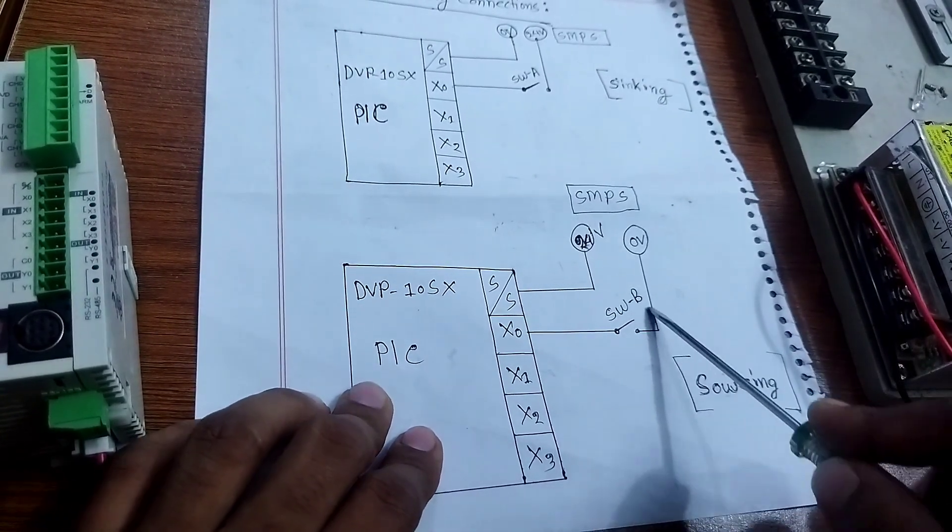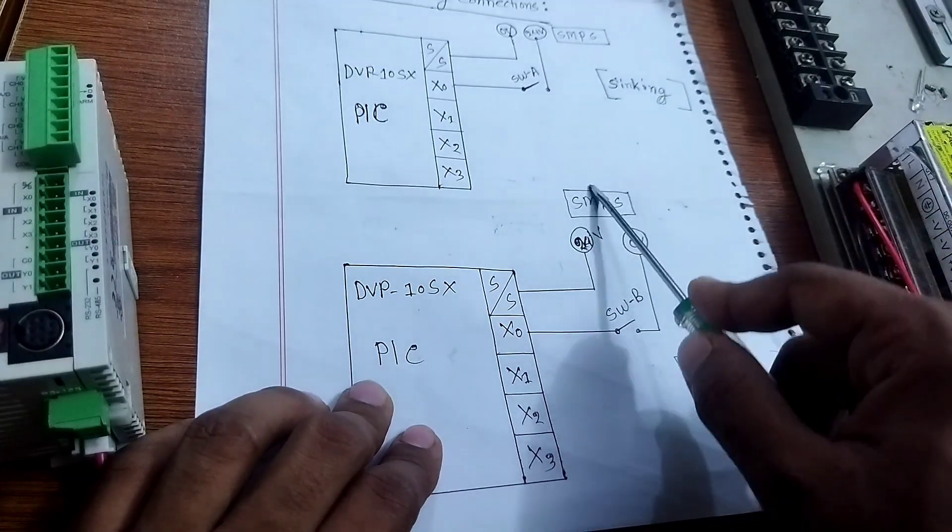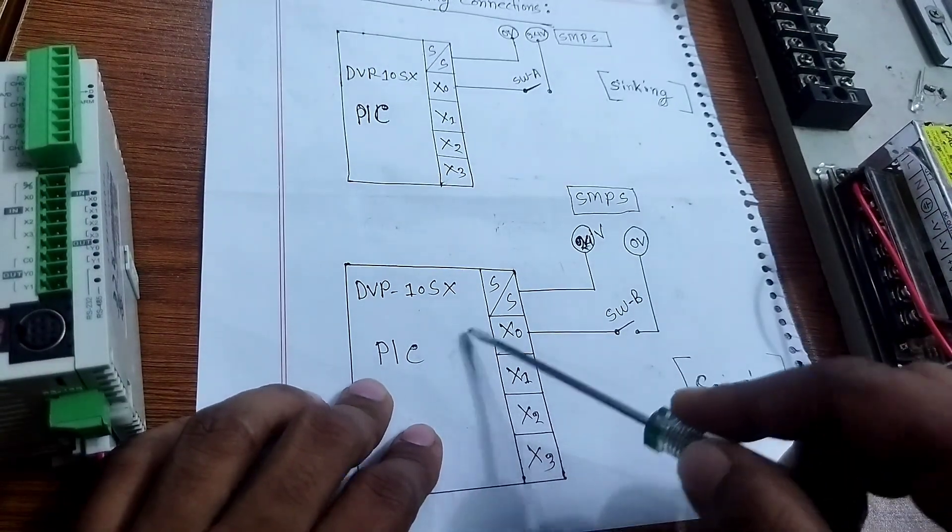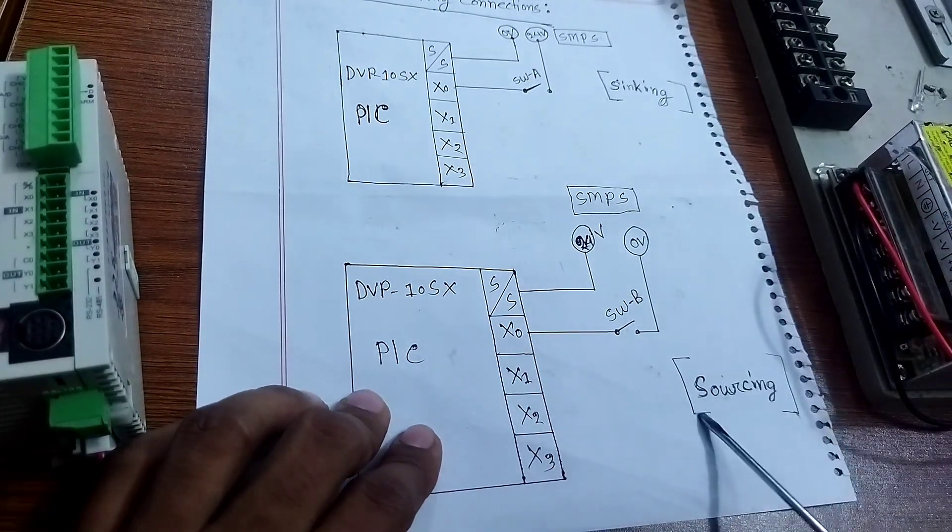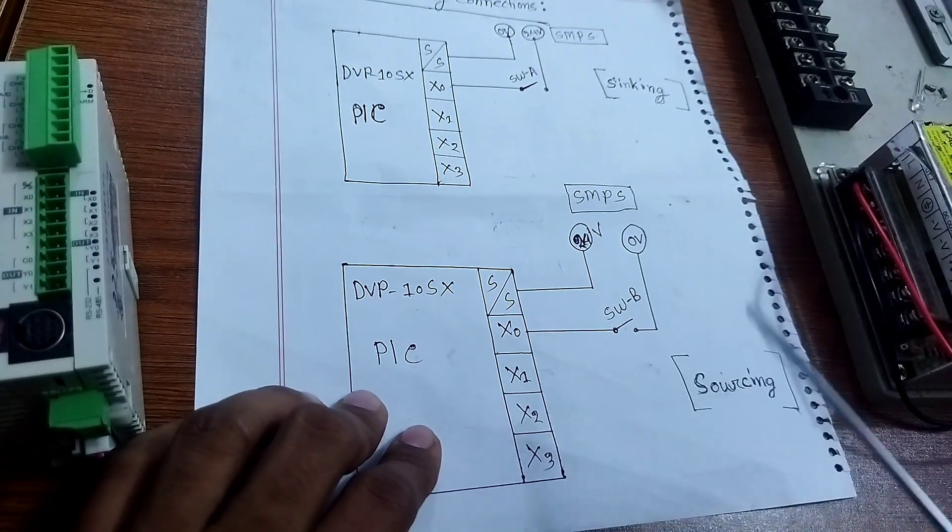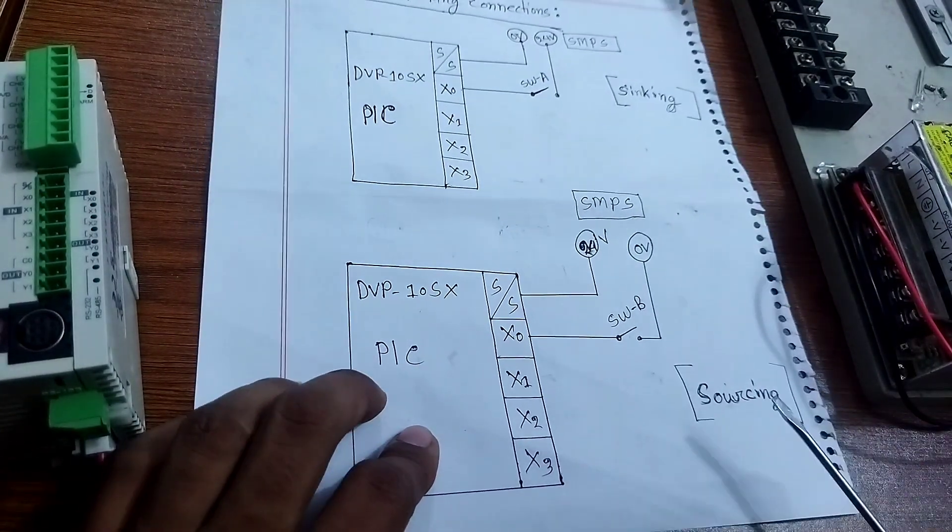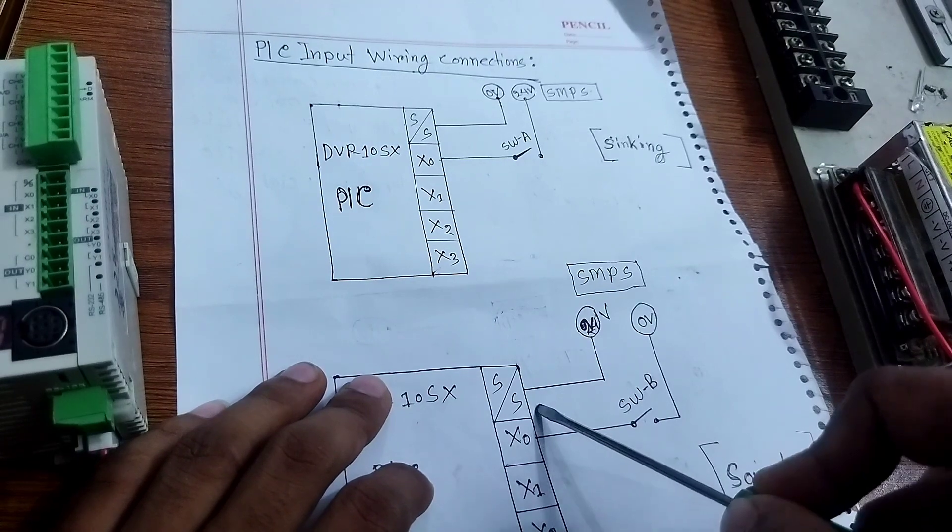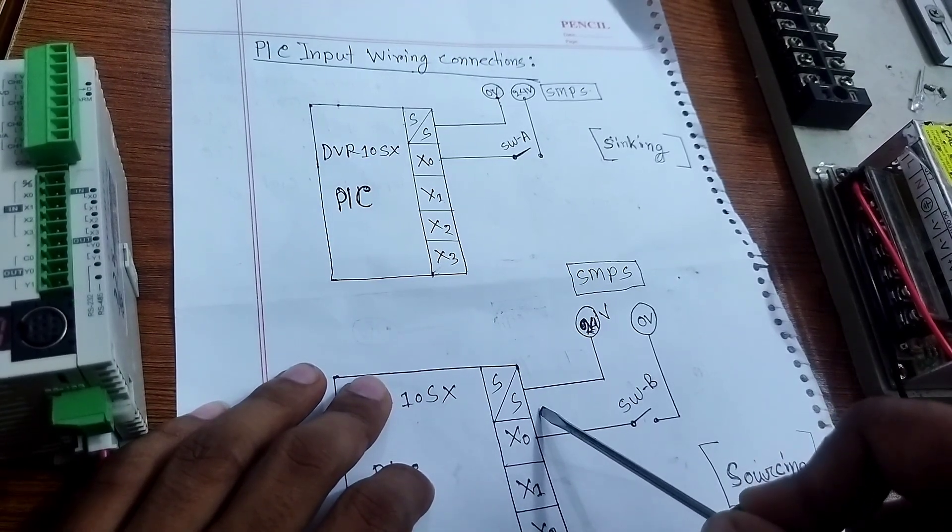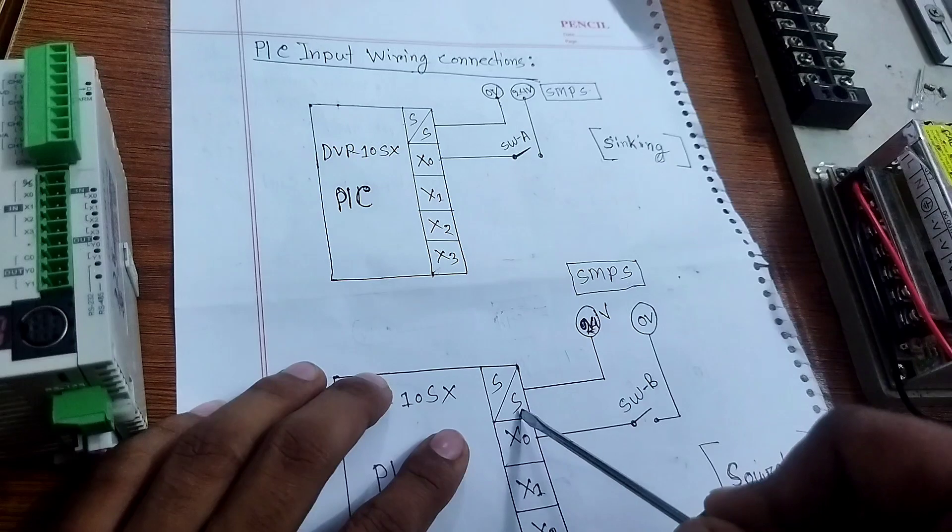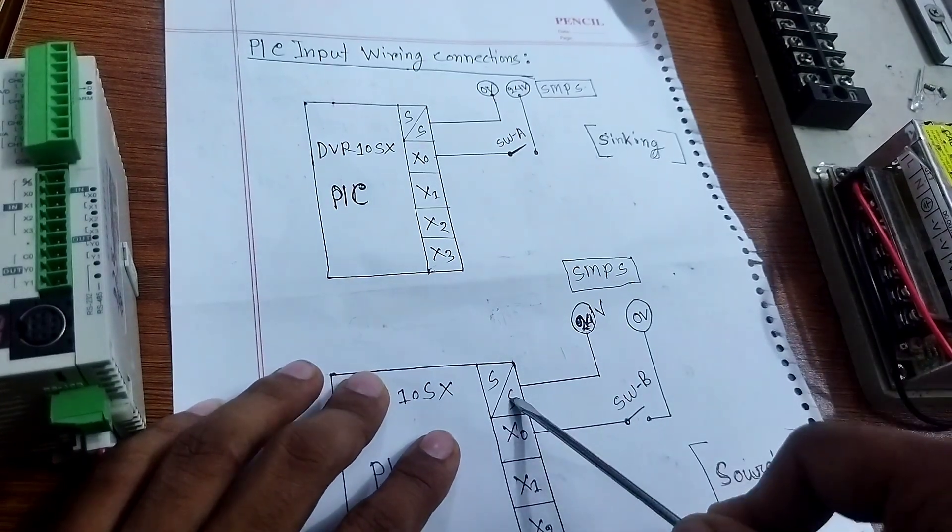For PLC source ordering, if we activate zero volt on SS port, then it is sinking ordering. And if you connect 24 volt to the SS port and output the switch to zero volt, this is sourcing ordering.